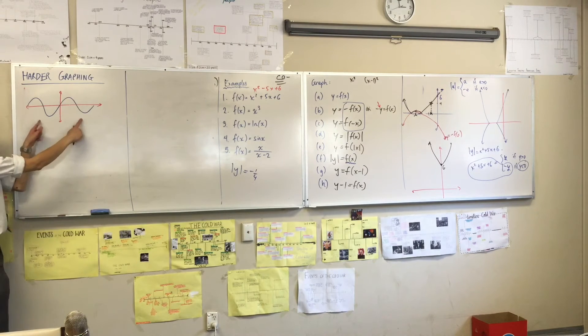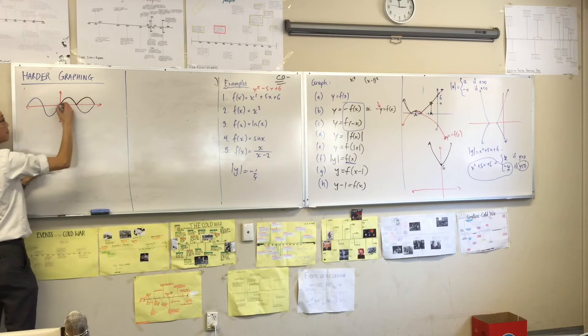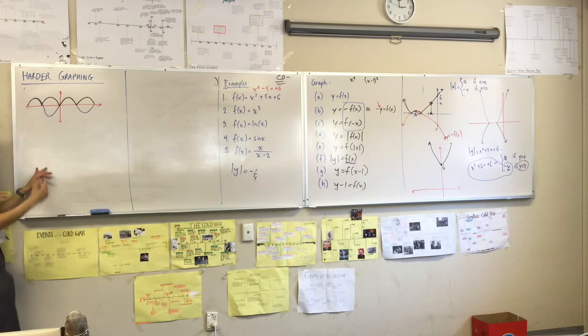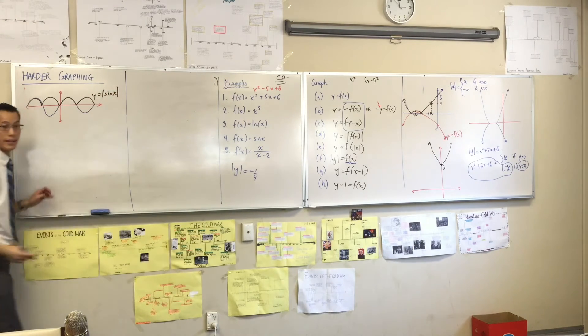Yeah, all these negative parts, they're going to flip up, aren't they? So you're going to get this guy. This is the same, but then this comes up like that. So what I've just drawn is, y is the absolute value of sine x.